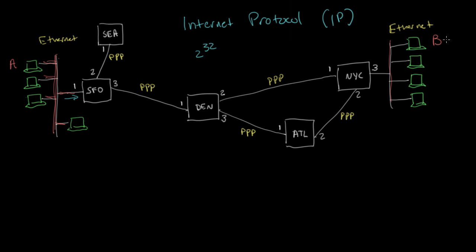So maybe the IP address of this computer over here in New York is 172.17.6.2.